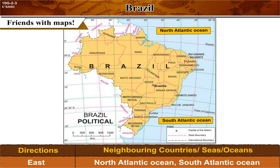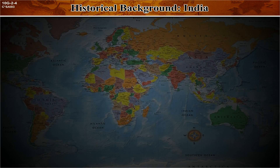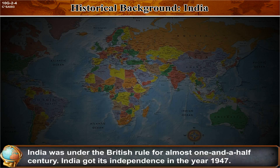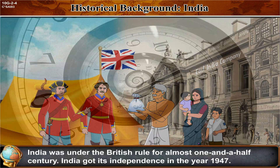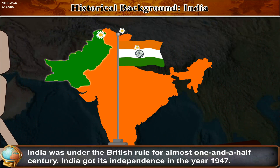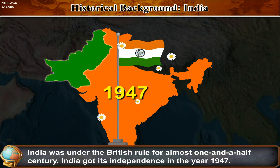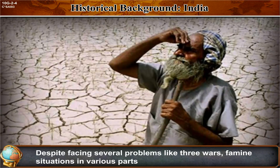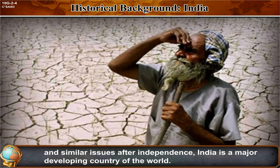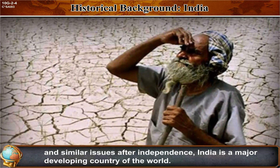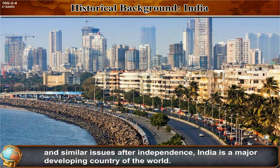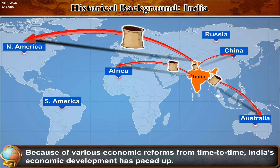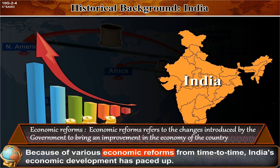Historical background — India. India was under British rule for almost one and a half centuries and got its independence in 1947. Despite facing several problems like three wars and famine situations after independence, India is a major developing country of the world and is also considered a global market because of various economic reforms.